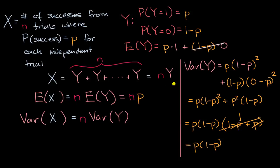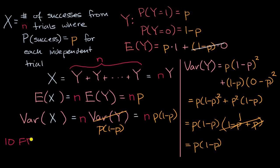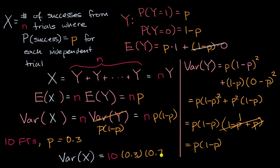We actually proved that in other videos, but there you have it. The variance of y is p times one minus p, and the variance of x is n times the variance of y. So the variance of x is equal to n times p times one minus p. Taking the concrete example from the last video: if I were to take 10 free throws, where each trial is a free throw, and my probability of success is 0.3 — a 30% free throw percentage — then the variance of x, the number of free throws made after 10 shots, will be 10 times 0.3 times one minus 0.3.